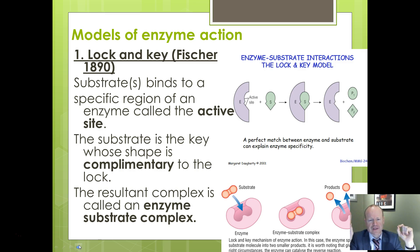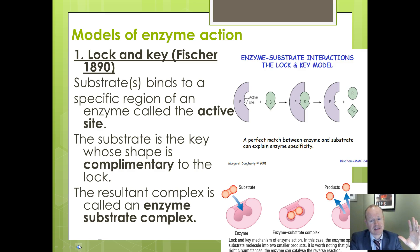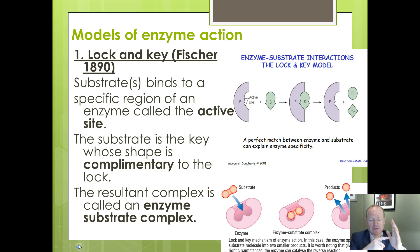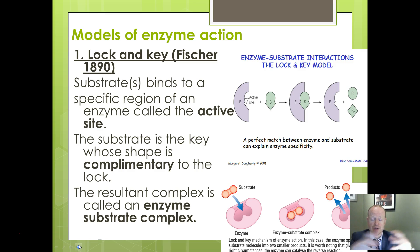There are two models of enzyme action. You should have met the lock and key model back at GCSE. The enzyme has a certain-shaped active site, and the substrate fits exactly into that active site, just like a lock and a key — the enzyme is the lock, the substrate is the key. Provided they're a perfect match, they form what we call an enzyme-substrate complex. The two are held together sufficiently so that their reaction can be catalyzed — either a substrate can be broken into two products, or the reverse can occur.